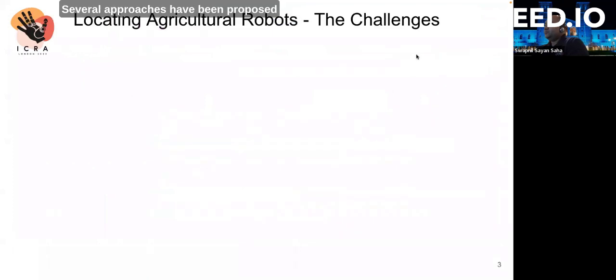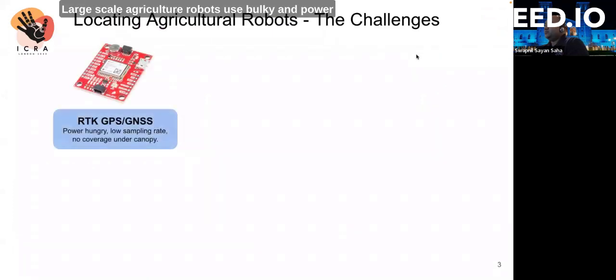Several approaches have been proposed to navigate agricultural robots. Large-scale agricultural robots use bulky and power-hungry RTK GPS systems for centimeter navigation. This approach suffers from low GNSS update frequency and cannot provide coverage in GPS-denied environments.